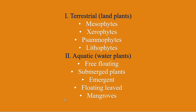Terrestrial habitat includes four types of plants: mesophytes, xerophytes, psammophytes, and lithophytes. Likewise, aquatic habitat includes five types of plants: free-floating plants, submerged plants, emergent plants, floating-leaved plants, and mangrove plants.